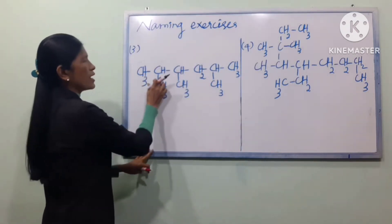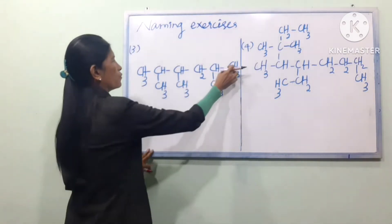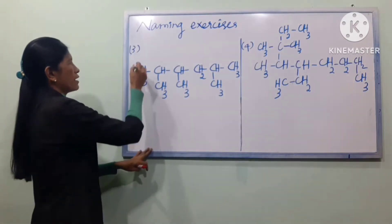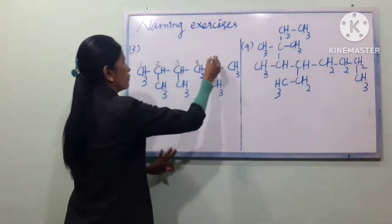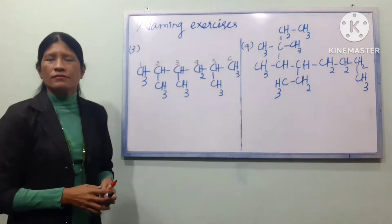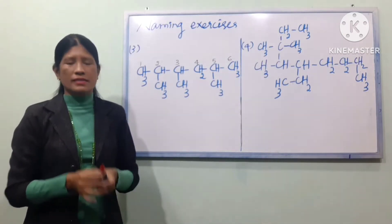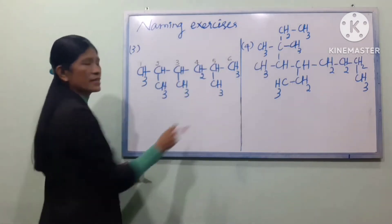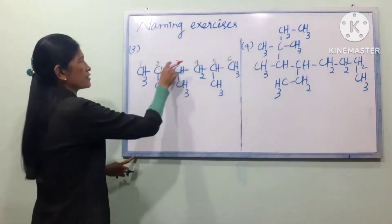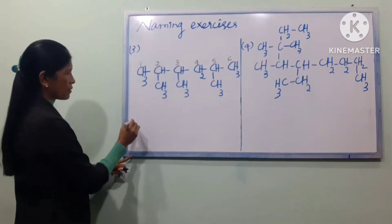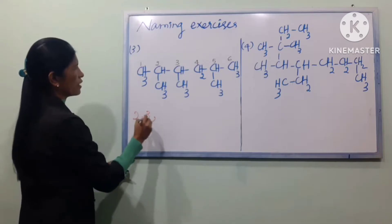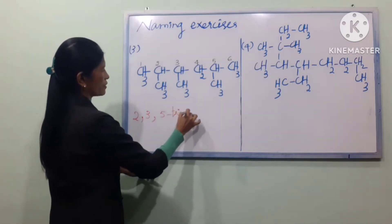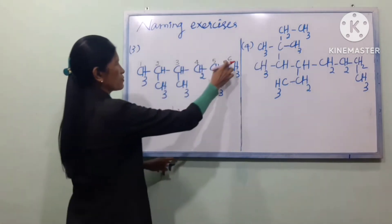One, two, three, four, five. Three is going to be ten. Like 1, 2, 3, 4, 5 — then we call it 1, 2, 3, 4, 5. Now, if you have 2, 3, 5, then we will give 2, 3, 5. We will give you 1, 2, 3, 4, 5, 6. Position 2 CH3, 3 CH3, 5 CH3 — these are the CH3 groups at positions 2, 3, and 5.